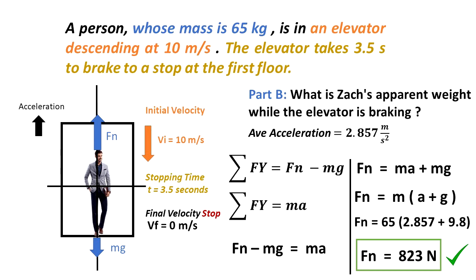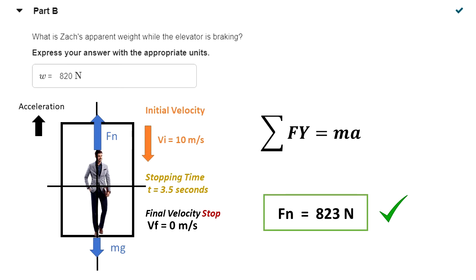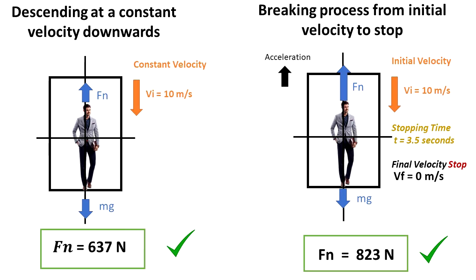This is the apparent weight of the man when the elevator starts braking. The answer was 820, again because of the number of significant figures that the problem is asking, but we know that 823 newtons is more precise. Now as a comparison, when the elevator and the man are descending with a constant velocity of 10 meters per second in dynamic equilibrium, the normal force or apparent weight is 637 newtons.